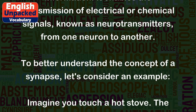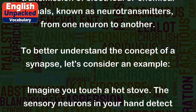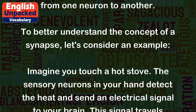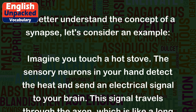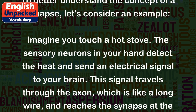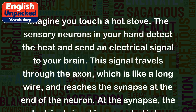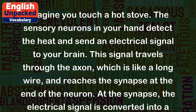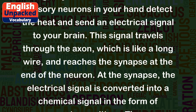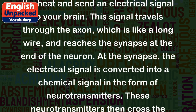To better understand the concept of a synapse, let's consider an example. Imagine you touch a hot stove. The sensory neurons in your hand detect the heat and send an electrical signal to your brain. This signal travels through the axon, which is like a long wire, and reaches the synapse at the end of the neuron.